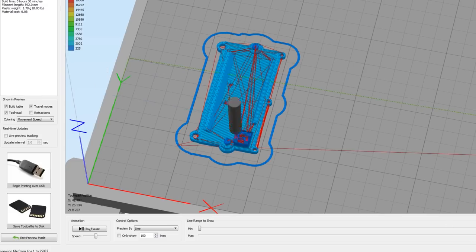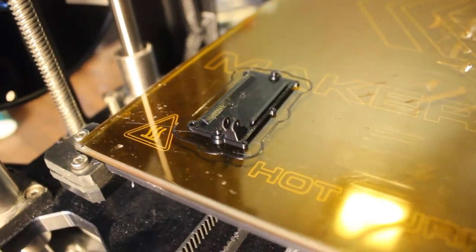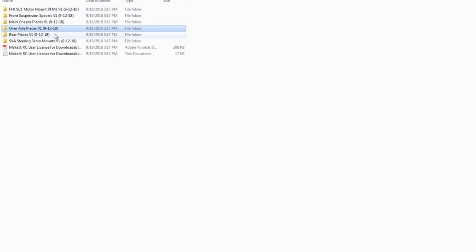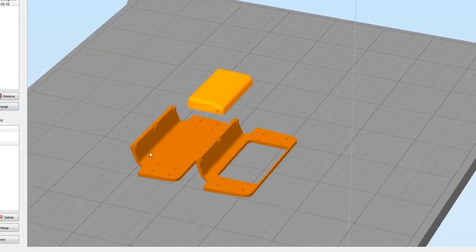Next I print the over axle piece. Once again I make sure that I'm selecting the correct one for the axle that I'm using. After that I print out the rear piece. I decided to print out both variations so I can test fit each of them and decide which one I want to use.